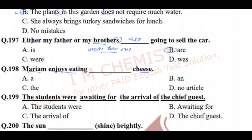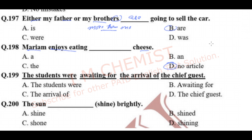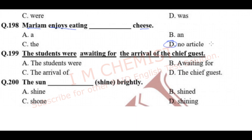Question number 198: 'Mariam enjoys eating cheese.' What article shall we use? Option D is correct — no article. When we are talking about something in general, we do not use any article.